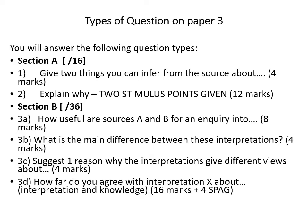3B covers how the interpretations are different, and 3C covers why they're different. The last question of the exam is worth 16 marks plus 4 marks for SPAG. You're given a statement asking 'how far do you agree with interpretation one or two about', and you use both interpretations and your own knowledge. Without further ado, I'm going to move on to questions one at a time and give you some specific tips on how to tackle them.